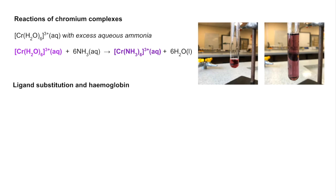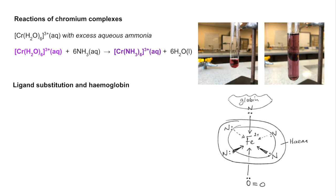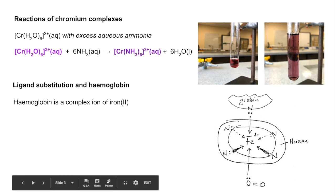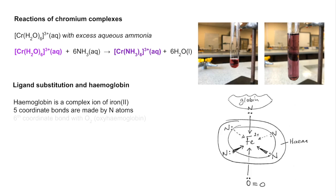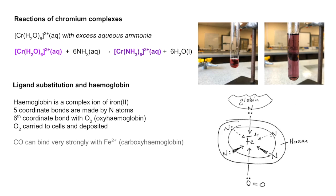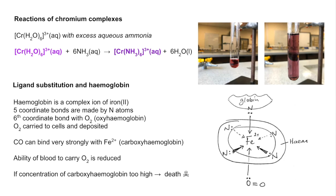We'll finish the ligand substitution section by looking at haemoglobin. It's a complex ion of Fe2+ in the middle, with a protein called globin at the top attaching via a coordinate bond from a nitrogen. The haem is a quadridentate ligand with four nitrogen atoms all forming coordinate bonds — making five coordinate bonds from nitrogen atoms in total. The sixth coordinate bond is with an oxygen molecule, forming oxyhaemoglobin, which carries oxygen to the cells. Carbon monoxide binds very strongly with the Fe2+, forming carboxyhaemoglobin, which reduces the blood's ability to carry oxygen and at high concentrations can lead to death.